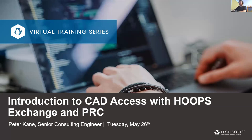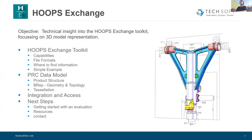Today I'm going to be talking about CAD access with HOOPS Exchange and PRC. The objective is to give you a technical insight into the HOOPS Exchange toolkits, focusing on the 3D model representation and looking at the basic capabilities. I'll walk through some simple code samples, and I'll also focus on the PRC data model, particularly product structure, geometry and topology, the boundary representation, and tessellation.